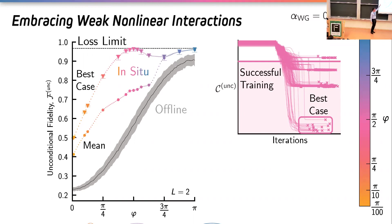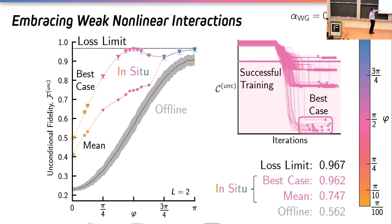There is a separation between the mean and the best case, making it harder to train to the best-case result, but that's a small price to pay: you achieve the same loss-limited performance as with the ideal non-linearity once you find that solution. For pi/2, the offline fidelity is around 56%, which increases to 96% when trained in-situ in the best case, within 0.5% of the loss limit result.